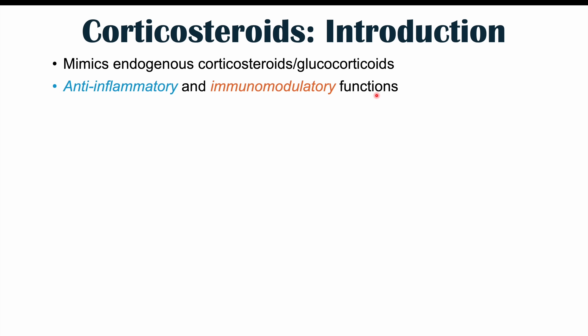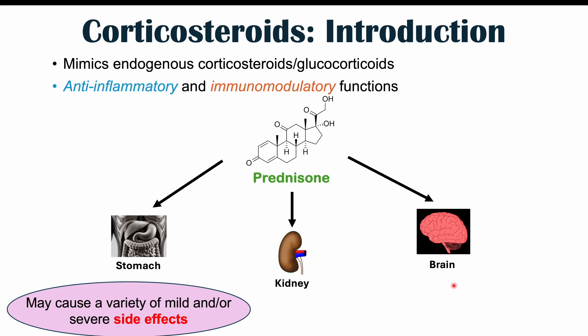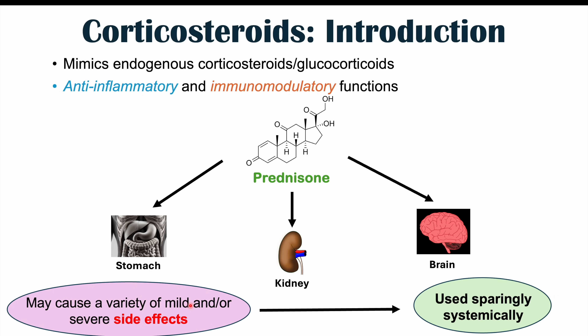We use corticosteroids to treat conditions like giant cell arteritis and autoimmune diseases such as flare-ups of rheumatoid arthritis or lupus. The side effects we're going to discuss in this lesson are from systemic use — effects on the stomach, kidneys, and brain. Prednisone causes a variety of mild and/or severe side effects, which is why we use them sparingly when taken systemically, generally only for flare-ups and not for too long a period of time, as long-term use is when many of these side effects occur.